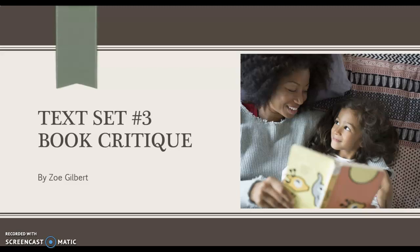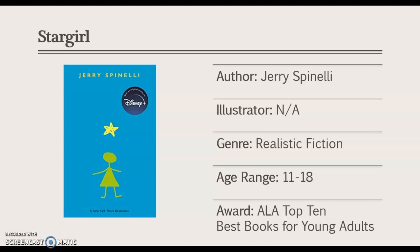First up, our feature book today is Stargirl by Jerry Spinelli. This would be in the genre of realistic fiction for preteens to teenagers, and it's in the top 10 best books for young adults according to the American Library Association. This book deals with themes of being yourself and not being afraid to stand out from the crowd. It also explores themes of peer pressure and shunning.